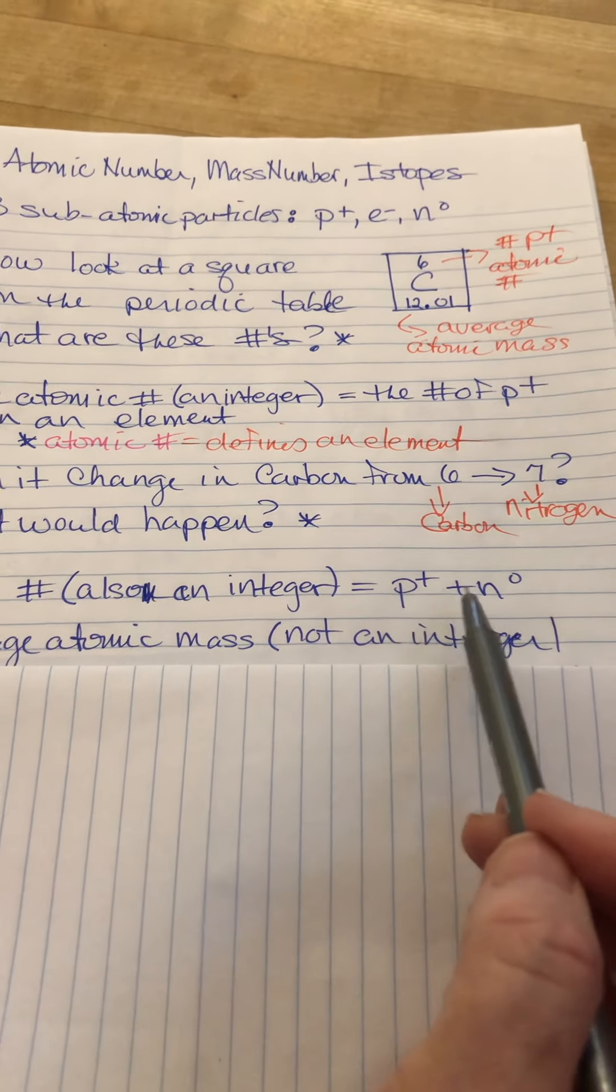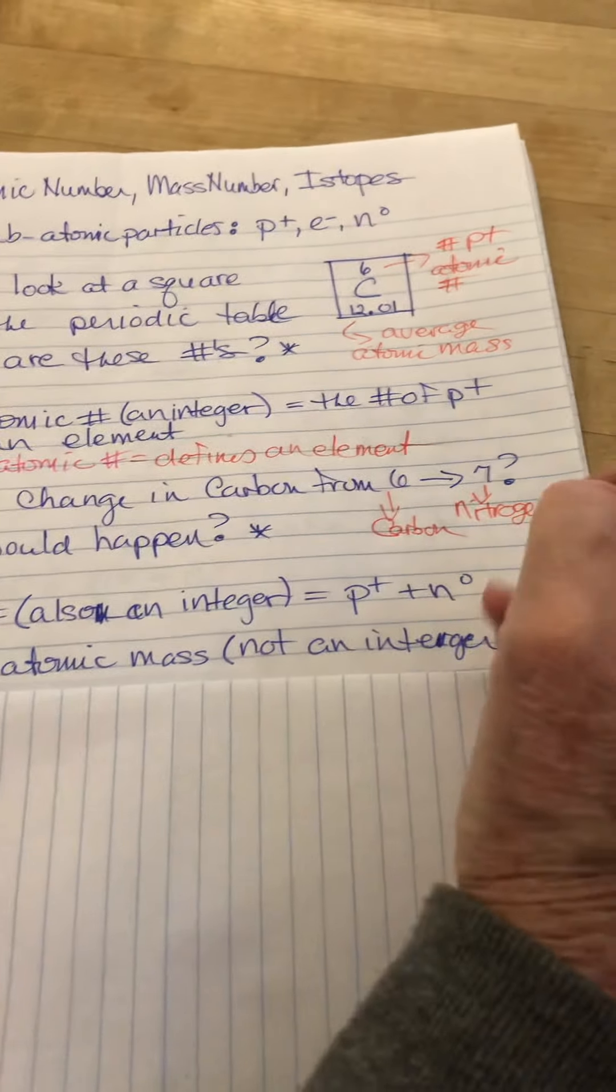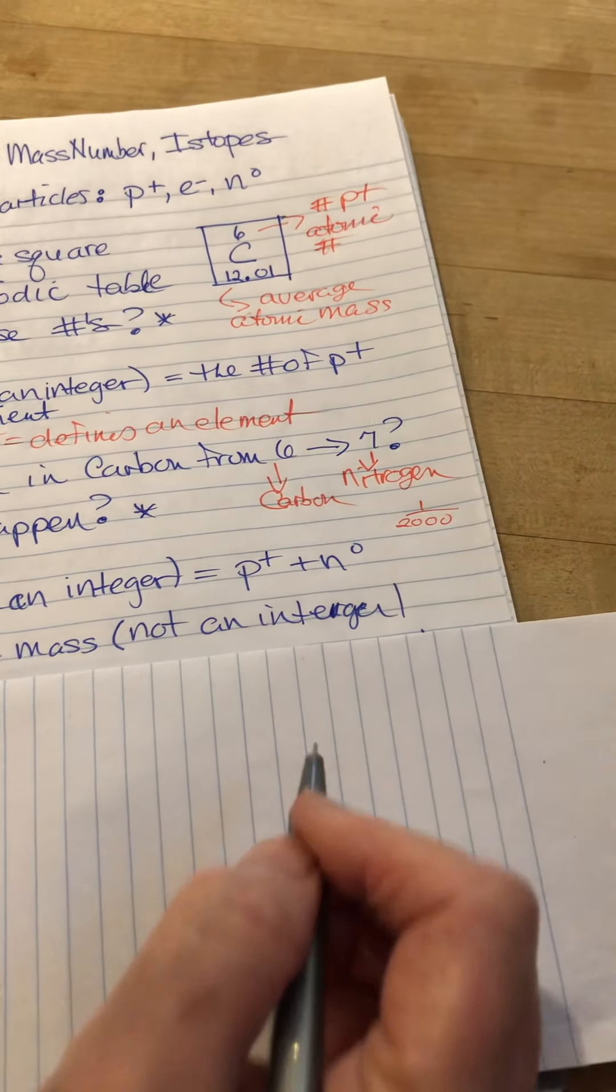These two are pretty close in mass. So if these both had a mass of one unit, one for the proton, one for the neutron, the mass of the electron would be one over two thousand. So it's super tiny.